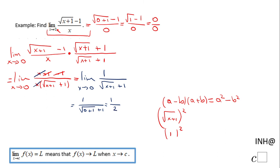0 plus 1 is 1, square root of 1 is 1, 1 plus 1 is 2. So, limit when x approaches 0 of square root of x plus 1 minus 1 over x equals 1 half.